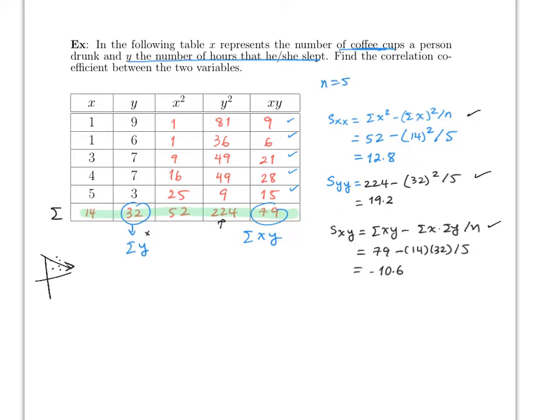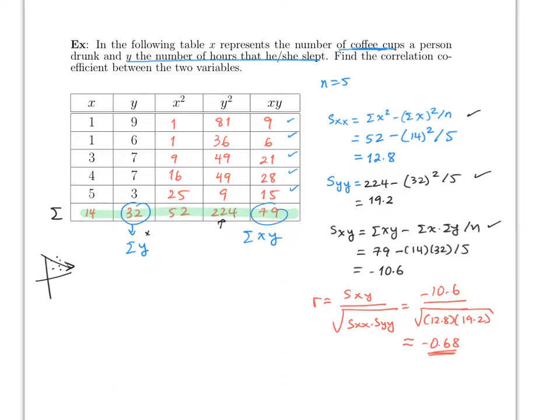Once you have S_xy, S_xx, and S_yy, plug them into the correlation formula: r = S_xy divided by the square root of (S_xx × S_yy). So r = −10.6 divided by the square root of (12.8 × 19.2), which is approximately −0.68.